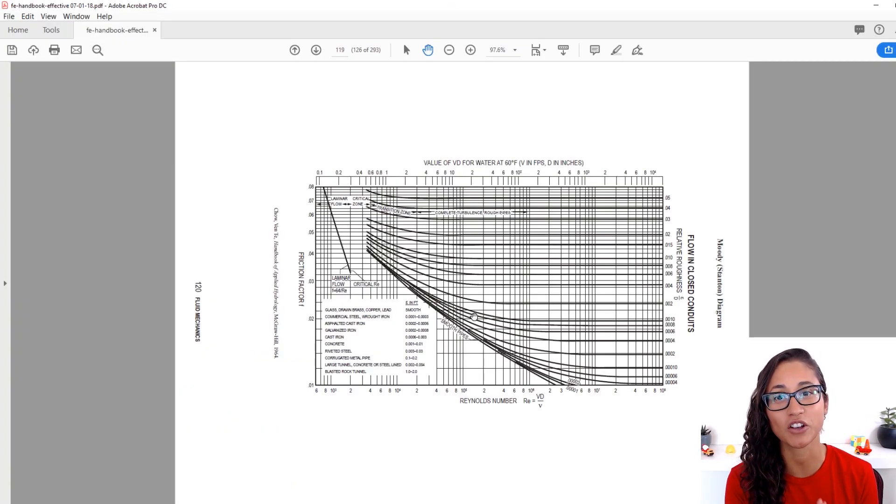The Moody chart is on page 119. Here, you have the Reynolds number, and then this is epsilon over D. Once you get those two numbers, you can easily find the friction factor.